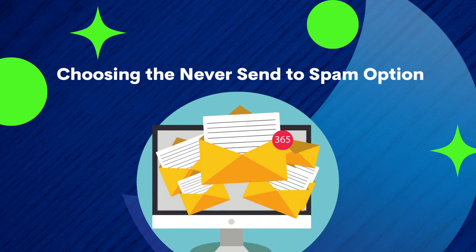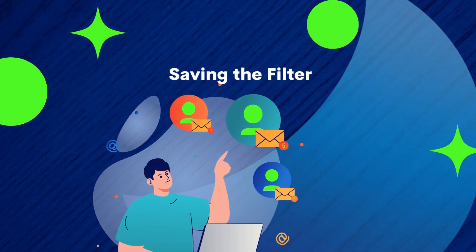Choosing the never send to spam option. Now that you've created a new filter with the email address and criteria, you can also simply check the box never send to spam without needing to select any other parameters. Saving the filter. After selecting the never send to spam option or other criteria, click on the create filter button to save the filter. We hope you have a better understanding of how whitelisting an email address in Google is an easy process that can help increase the likelihood that important emails from your important clients are not missed.